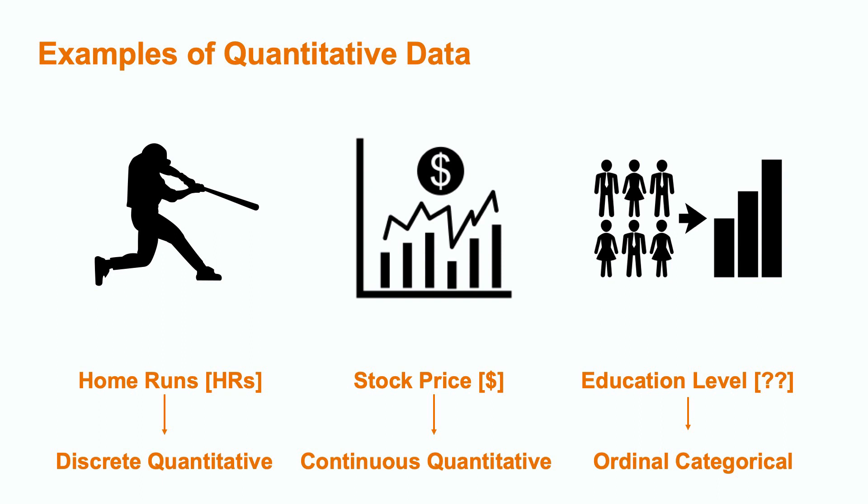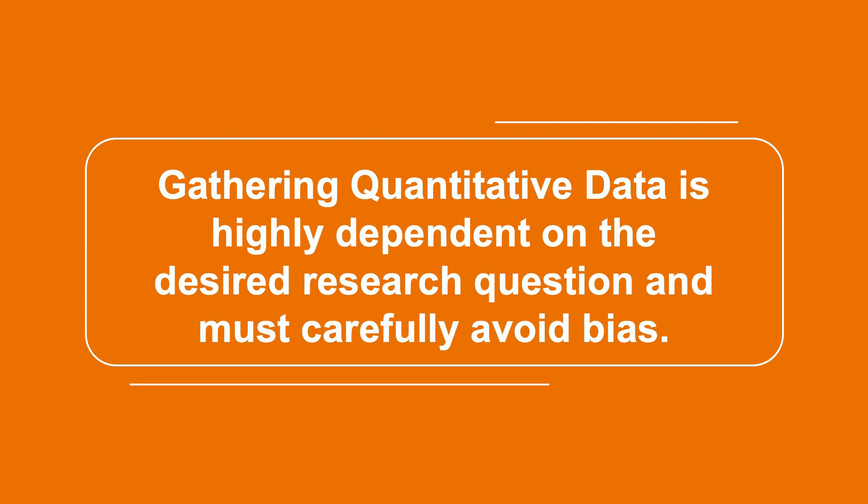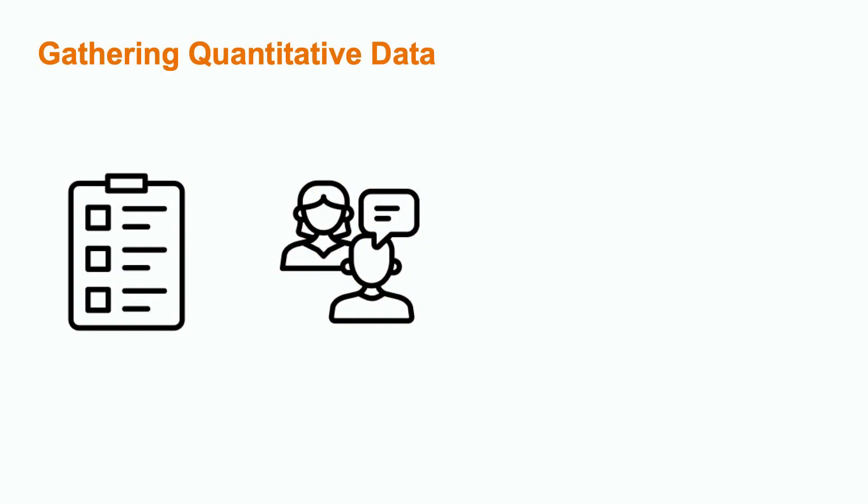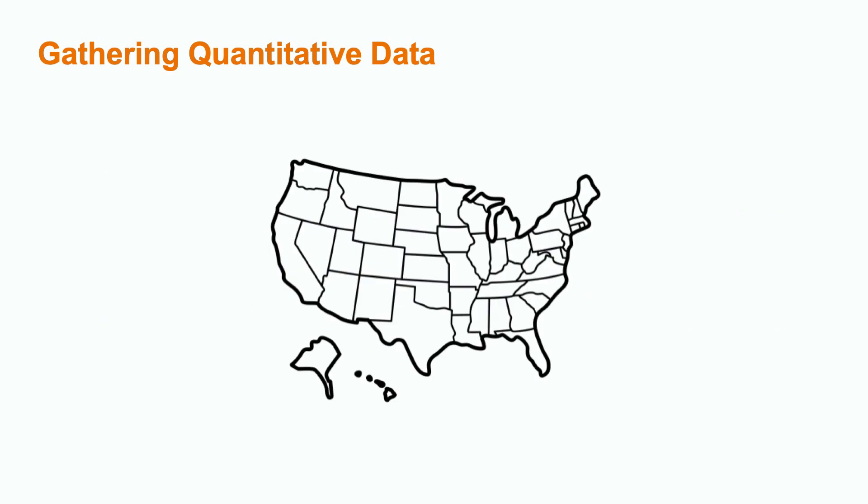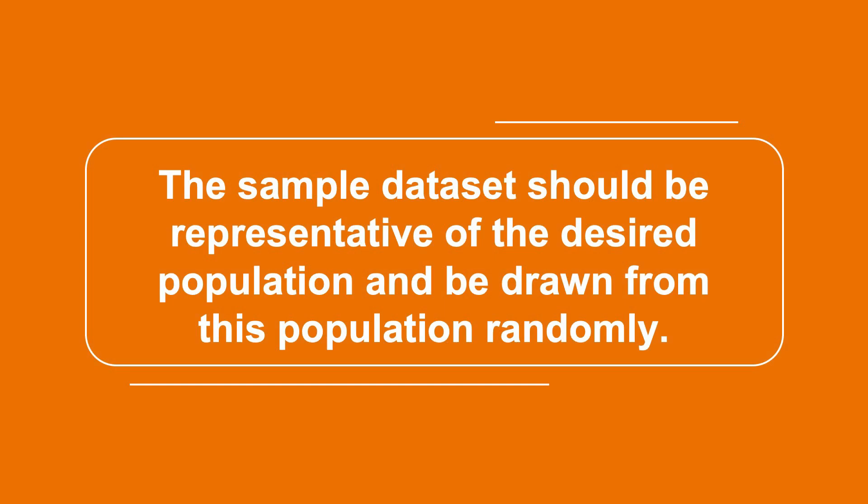Now that we have a bit of context on quantitative data, how do we gather this data? Gathering quantitative data is highly dependent on the research question and must carefully avoid bias. When responses need to be gathered from people directly, surveys or interviews are often most useful. Other types of data can come from science experiments or automatic detectors such as car counters. For unbiased data, the population from which the data is gathered should be representative of the research question. For instance, if you want to know something about the income of people in the United States, you can't just sample residents of Florida. You would have to sample randomly from the entire population. The sample dataset should be representative of the desired population and be drawn from this population randomly.